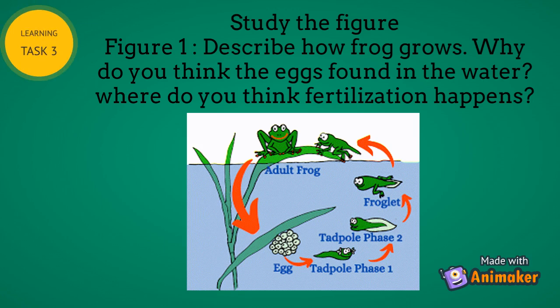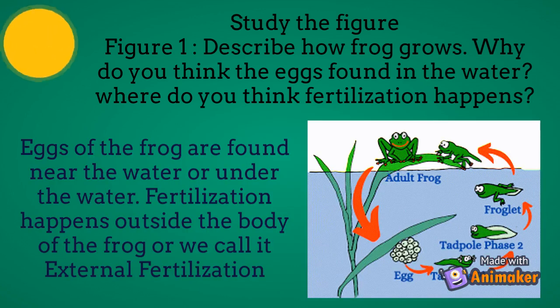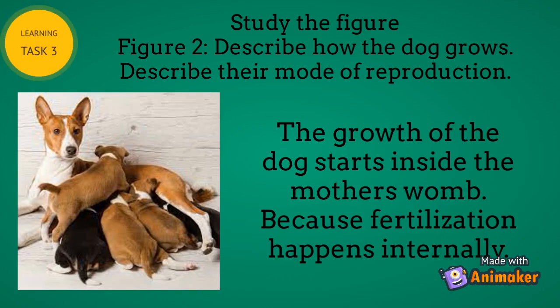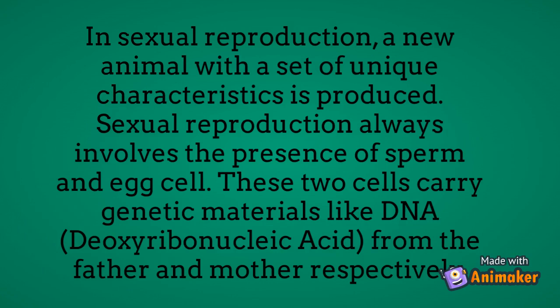Study the figure. Figure 1: describe how a frog grows. Why do you think the eggs are found in the water, and where does fertilization happen? Eggs of the frog are found near or under the water. The fertilization happens outside the body of the frog — this is called external fertilization. The growth of the dog starts inside the mother's womb because fertilization happens internally. In sexual reproduction, a new animal with a set of unique characteristics is produced. Sexual reproduction always involves the presence of sperm and egg cell, which carry genetic materials like DNA — deoxyribonucleic acid — from the father and mother respectively.